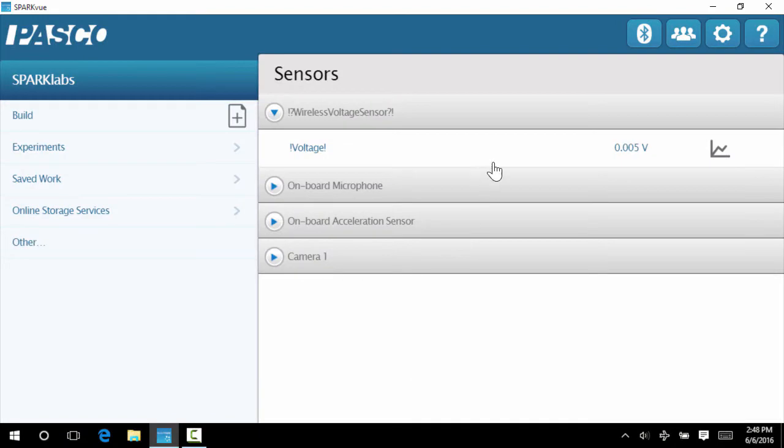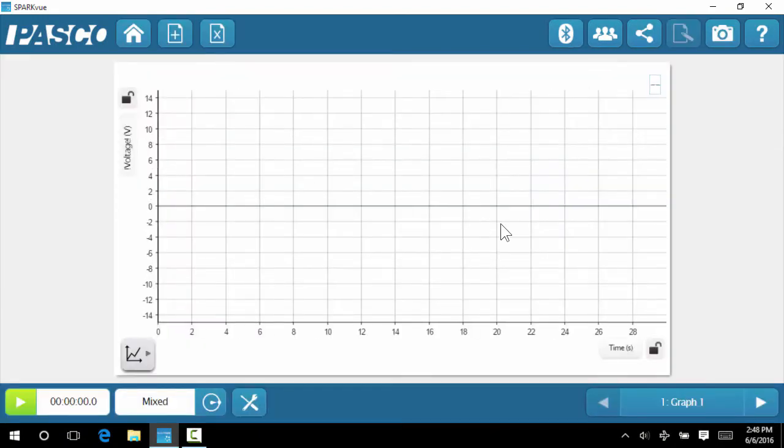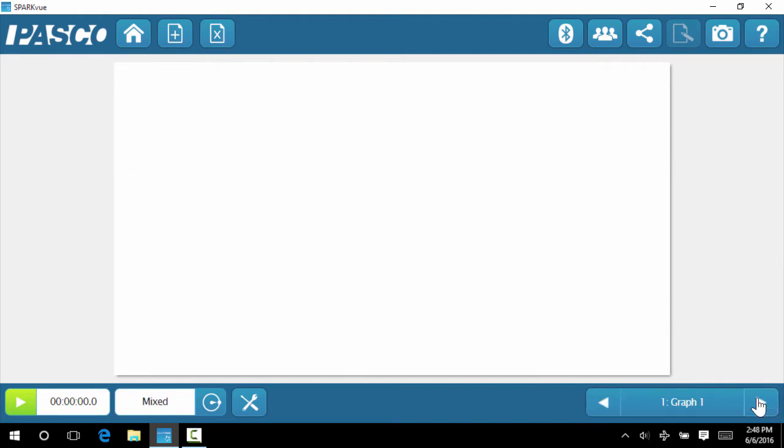Now it's on the home screen. I see that it is getting a voltage, so it's reading. I'm going to move to our digits screen, so I double click that. First thing I see is a graph, but if I move down to the bottom right hand corner, one touch, I'm at the voltage screen. And that's all I need for this lab.